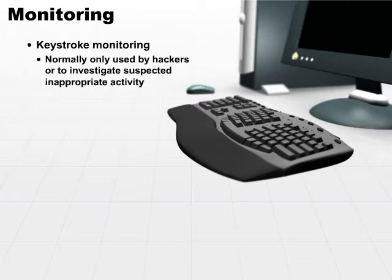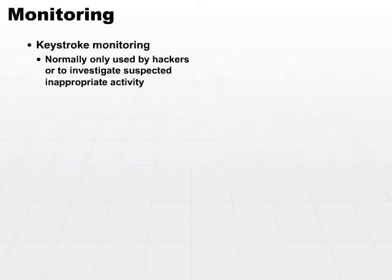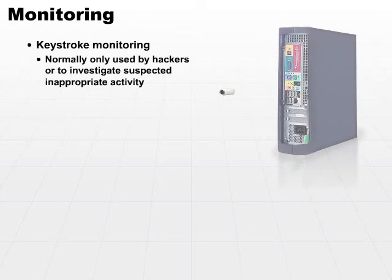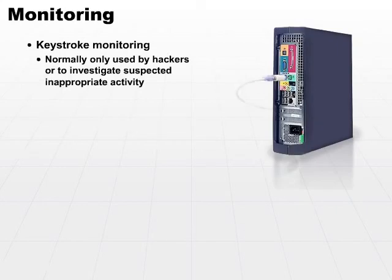Always pay attention to the physical characteristics of a system. The most convenient way to monitor keystrokes is to place a hardware device — it looks almost like a dongle that you would use to attach a network cable to a laptop PC. It's a very short device that plugs into the keyboard port on the back of a machine. If you ever see one of those hanging off the machine, chances are somebody's monitoring the keystrokes.